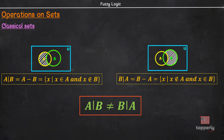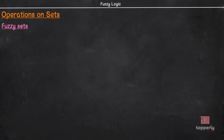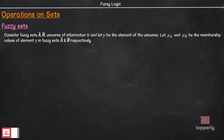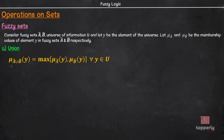So far we have learned about union, intersection, complement, and difference operations in the context of classical sets. Next, we will learn about the same operations in the context of fuzzy set theory. Consider two fuzzy sets A and B in a universe of information U, and let Y be an element of the universe. Let mu A and mu B be the membership values of element Y in fuzzy sets A and B respectively. Then the membership value of element Y in the fuzzy set A union B is given by: mu A union B of Y equals maximum of (mu A of Y, mu B of Y) for all Y belonging to universe U. We can shorthand this notation as mu A union B equals mu A union mu B.